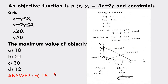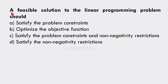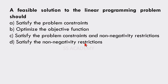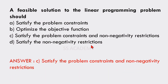Next question: A feasible solution to the linear programming problem should — satisfy the problem constraints, optimize the objective function, or satisfy both the problem constraints and non-negativity restrictions? The answer is option C: satisfy the problem constraints and non-negativity restrictions. This is the basic concept of linear programming.